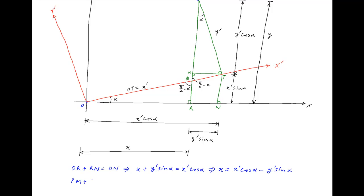Similarly, the sum of the vertical distances PM plus MR is equal to PR, which implies that Y' cos alpha plus X' sin alpha is equal to Y.